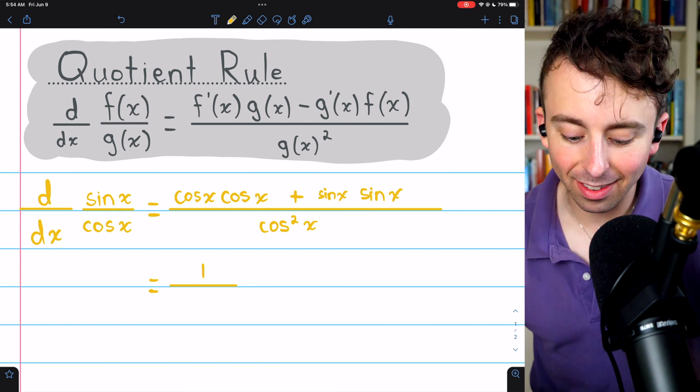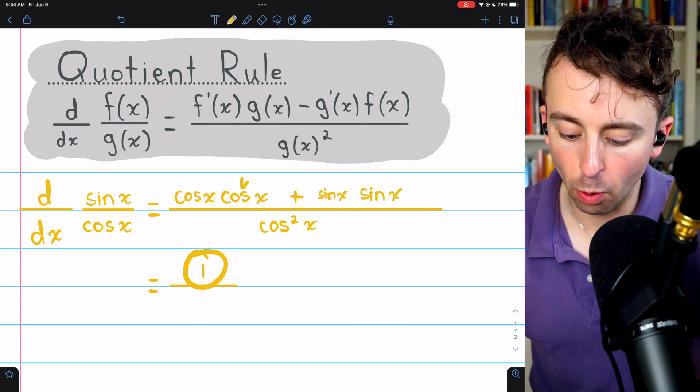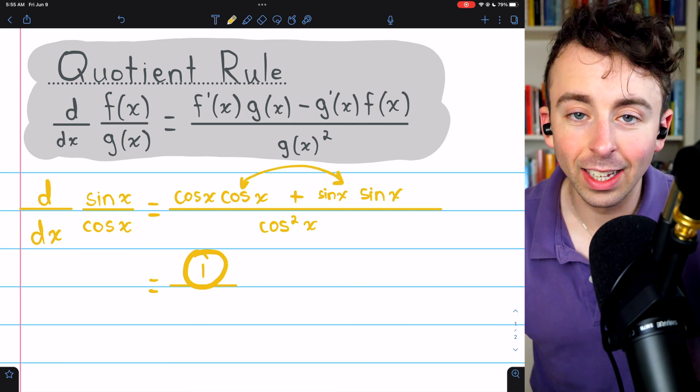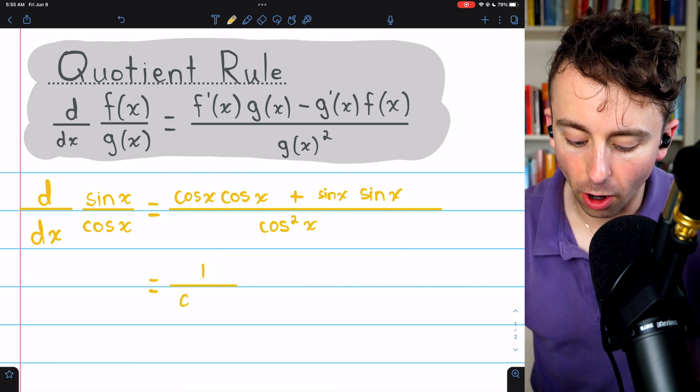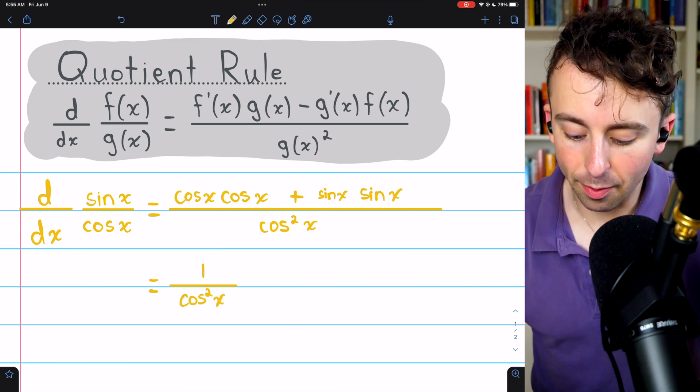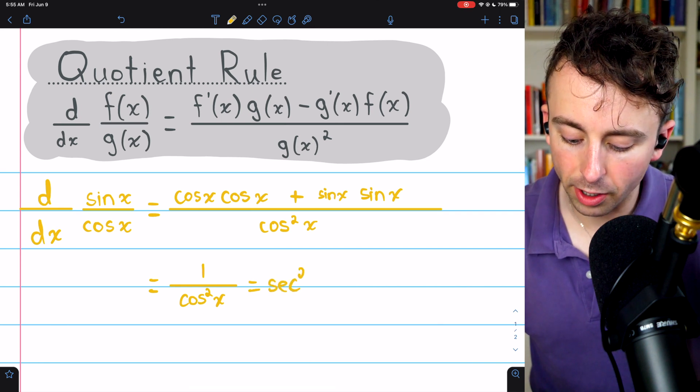So we have cosine squared plus sine squared. But the Pythagorean identity, that's one. Sine squared plus cosine squared or the other order. Order doesn't matter because it's addition. That is one. So this is just one divided by cosine squared. And by definition, that's just secant squared because secant is one over cosine.